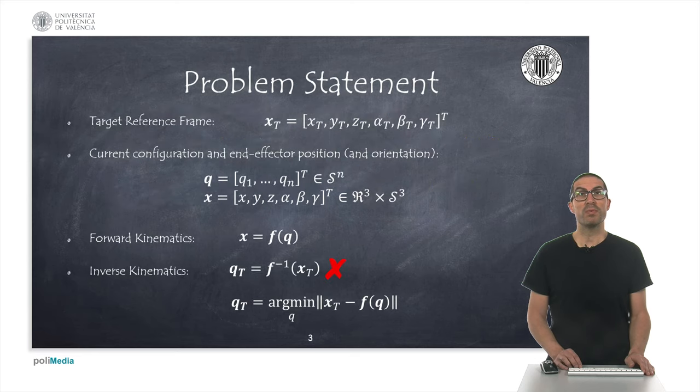In first place, let us recall our problem statement. Our goal is to find out the final configuration that a robot manipulator must have so that its end effector reaches a given target position and orientation, that is, a target reference frame.